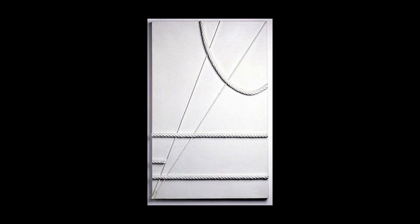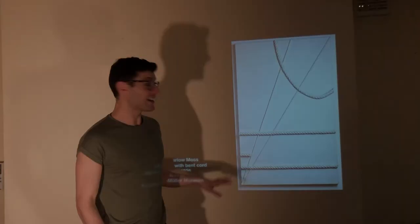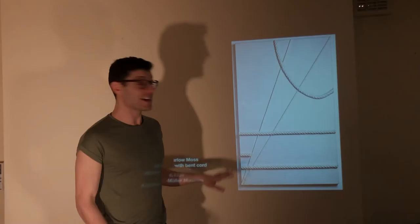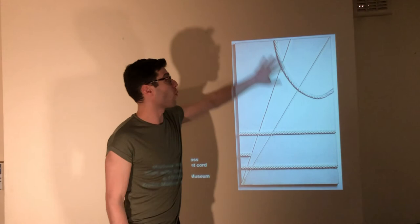But we can't really talk about light without talking about one of her relief paintings. So here we have one example, white with bent cord. And it's exactly what the title describes it as. We have a white canvas here emblematic of an expanse of space that is not broken up with black lines but with white cords and white strings.